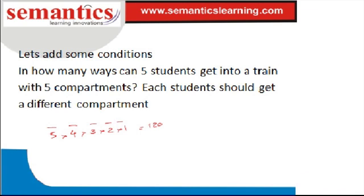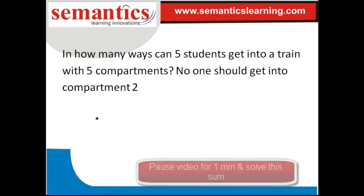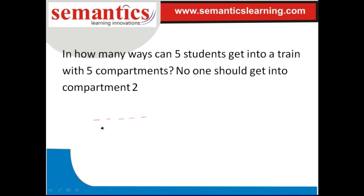Now try this: five students, five compartments — the condition is no one should enter compartment two. Put five dashes. Pick up the first student: they can't go into compartment two, so they can go into any of the other four compartments — four ways. The second person can also go into the same compartments, so it's four ways again. It will be four, four, four, four, four — multiply to get the answer.